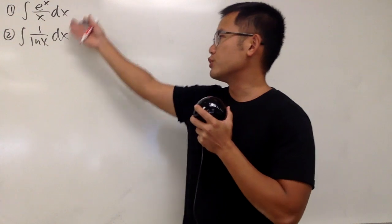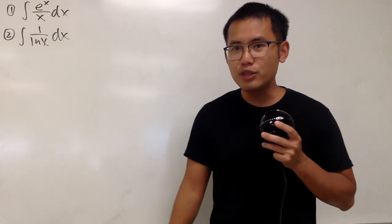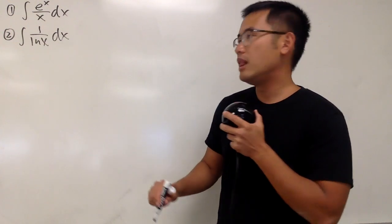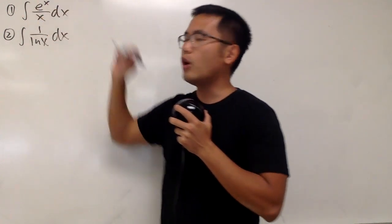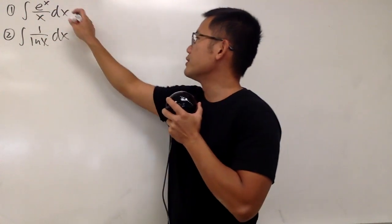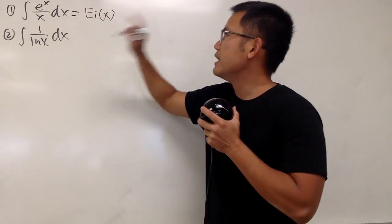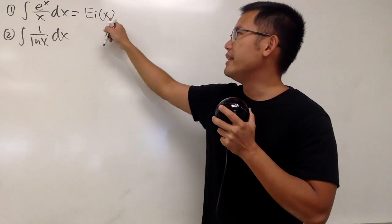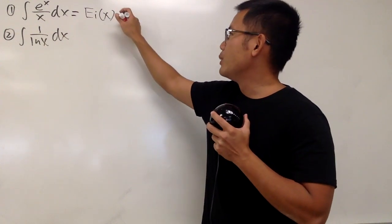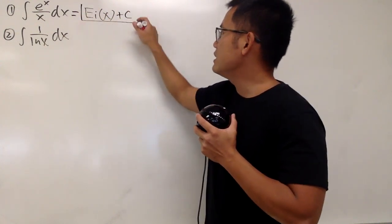Unfortunately, the answers to them are not elementary, but it's okay because we can use special functions to help us out. Let's look at the first one, the integral of e^x over x. Well, we can actually just answer this as Ei(x), namely, the exponential integral function, and the input right here is x. And after we put on the plus C, this is it.